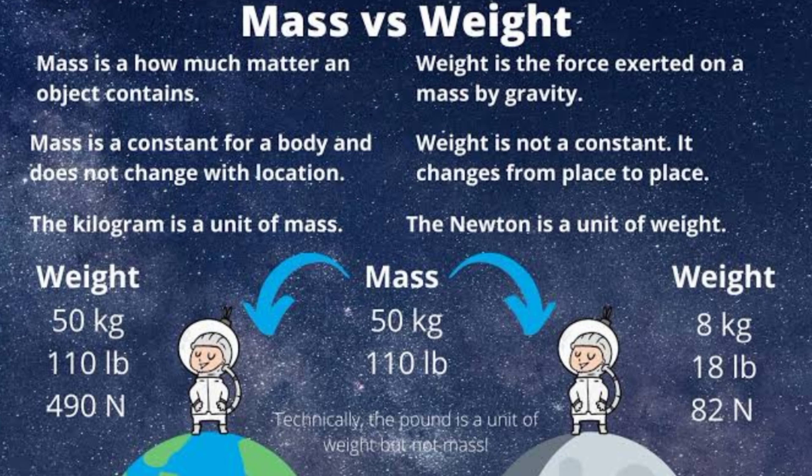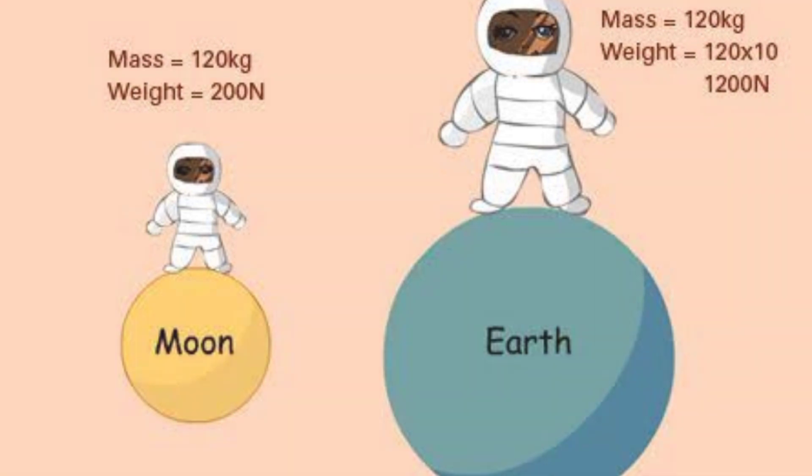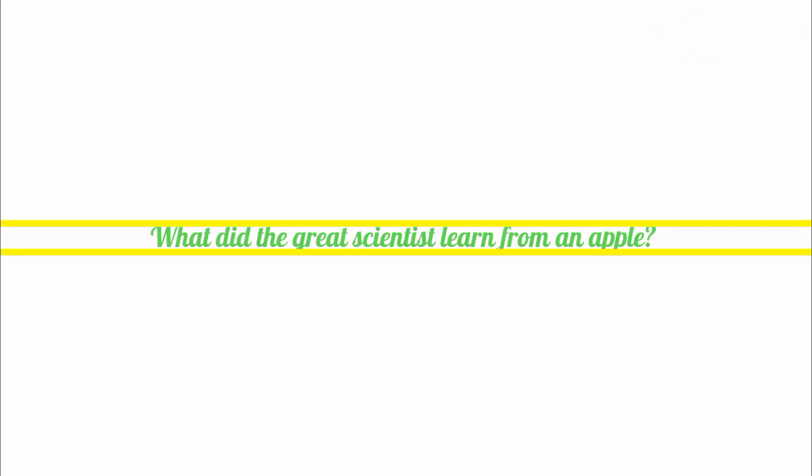What's the difference between mass and weight? Mass is the amount of matter in an object; it is the same whenever you measure it, even on the moon. Weight, on the other hand, is a measure of the force of gravity on an object, and it varies according to where you measure it.